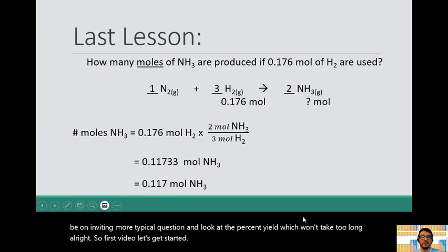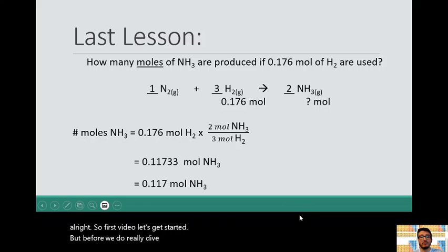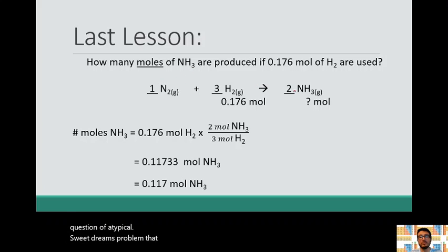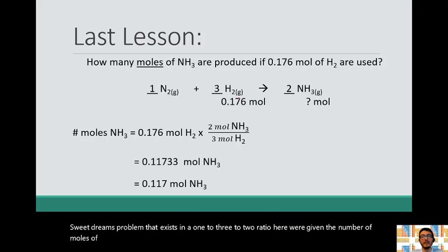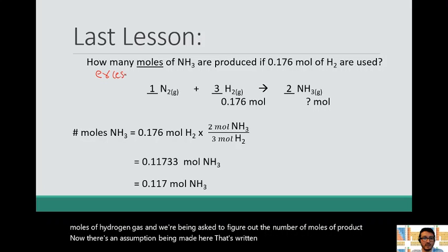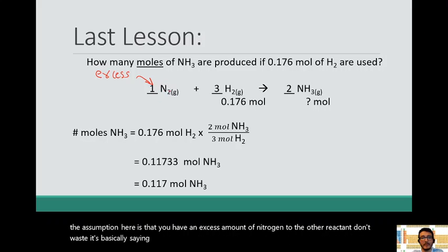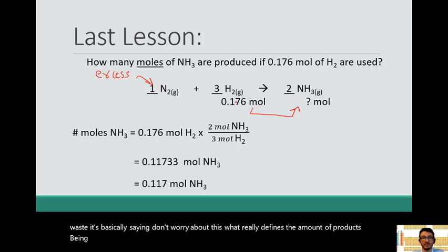But before we really dive into limiting reagents, let's review a bit of stoichiometry. Here is a question of a typical stoichiometry problem that exists in a 1 to 3 to 2 ratio. Here we're given the number of moles of hydrogen gas, and we're being asked to figure out the number of moles of product. Now there's an assumption being made here that's written sometimes and sometimes it's not. The assumption here is that you have an excess amount of nitrogen, so the other reactant don't waste. It's basically saying, don't worry about this. What really defines the amount of products being produced is the number of moles of hydrogen which is given.